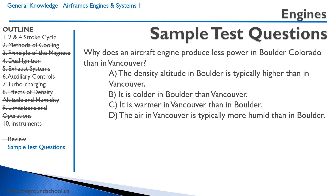Why does an aircraft engine produce less power in Boulder, Colorado than in Vancouver? Vancouver is at sea level, and Boulder, Colorado is much higher — it's in the mountains. So the density altitude in Boulder is typically higher than in Vancouver, meaning the air is less dense, which reduces engine power. That is the correct answer. Colder air actually produces more power when elevation is the same, and while Vancouver is more humid, that's not the primary reason for the power difference — it's the altitude.